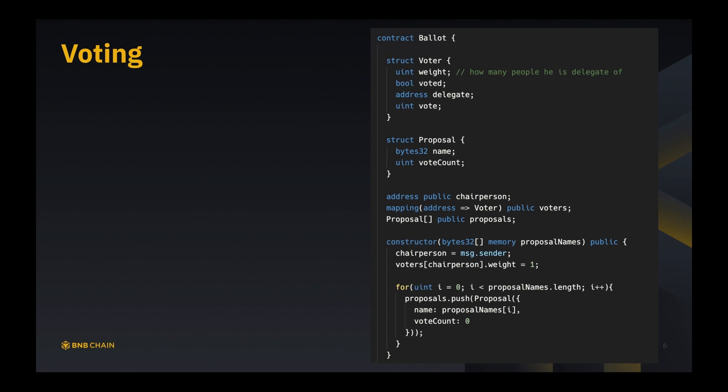We set weight to one. Right now voters[chairperson] will not be created, so we just set weight to one and it will initialize a new one for us. Everything will be set to zero by default, so that is the value we want. Voted needs to be false initially. After that, we just initialize all the proposals according to proposal names and set vote counts to zero initially. That completes the initialization and we will go to future functions.